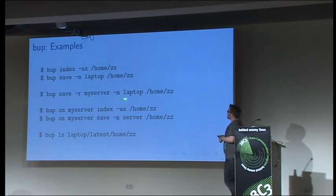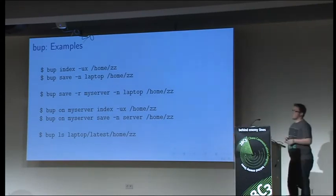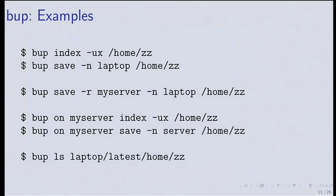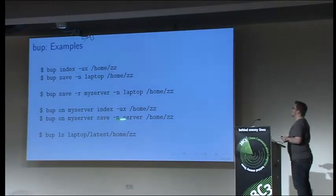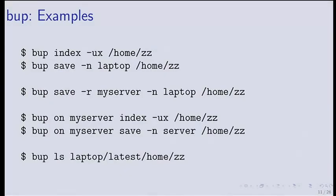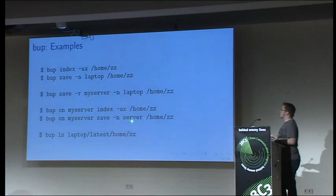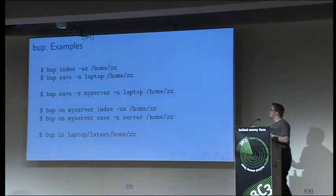The third command is backing up to a server. This is done over SSH, so you can do push-style backups to a remote machine. You can also do pull-style backups — backing up a server to your local machine. With the 'on' command you can run commands on a remote server. You need BAP installed there and SSH configured, then you do the index step and save step to have your backups locally.